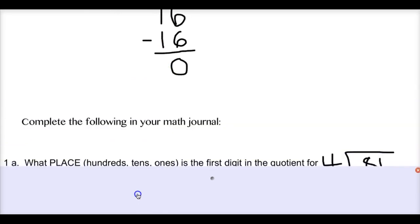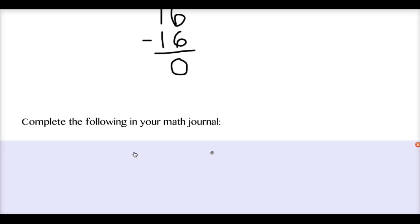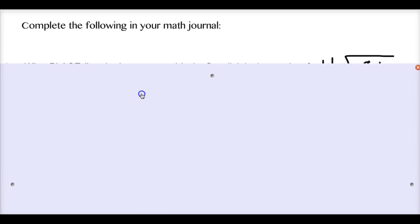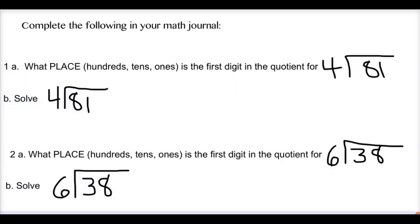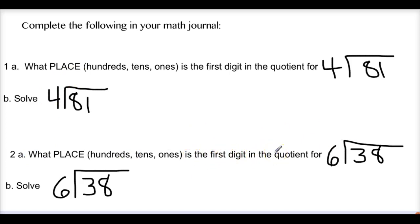So those are a couple of ways that you can estimate to find your quotient, or find where the first digit in your quotient is going to be — tens place, hundreds place, ones place. What I want you to do now is get out your math journals and complete questions 1 and 2. These have two parts. It says: what place — hundreds, tens, or ones — is the first digit in the quotient for 81 divided by 4? You're going to tell me which place, then actually solve that division problem. Same thing with number 2: tell me what place the first digit goes for 38 divided by 6, then solve 38 divided by 6. Go ahead and pause the video and complete those questions.